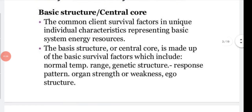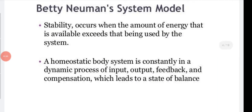Stability occurs when the energy available exceeds the energy being used by the system — there should be a little more energy remaining in the body. For a homeostatic body system, there is a constantly dynamic process of input, output, feedback, and compensation, which leads to a state of balance. Homeostasis encompasses both negative and positive effects together as one factor.